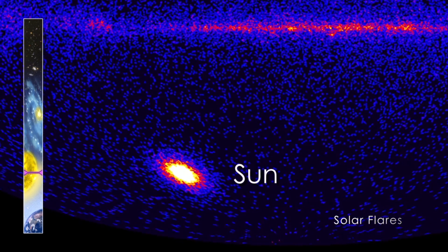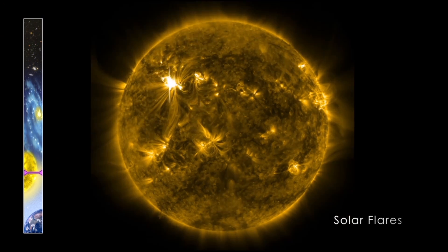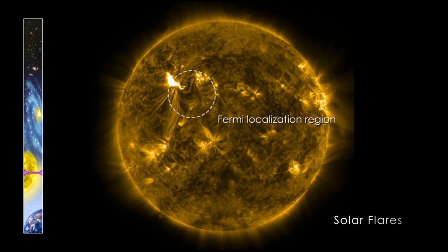In early March 2012, a powerful flare erupted on the Sun. During this event, the LAT detected the highest energy light ever recorded from a solar flare.